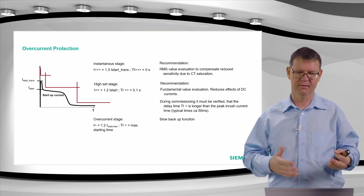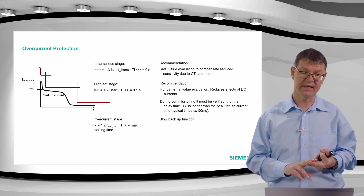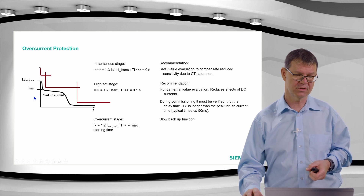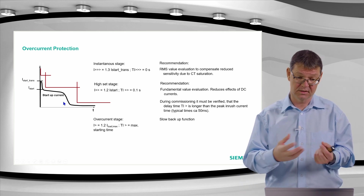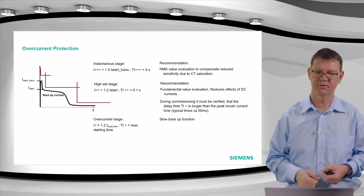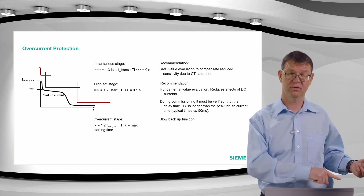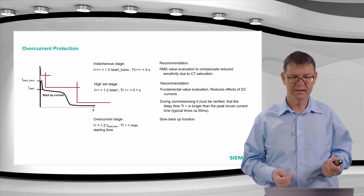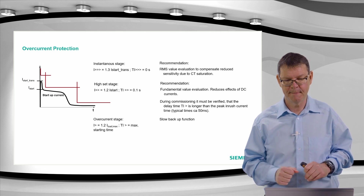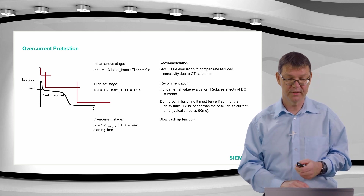For ground fault protection in a grounded network, we can apply a ground overcurrent stage ANSI 50/51N. The setting threshold should be determined by observing the apparent ground current during motor startup and placing the threshold 10–20% above that value for a sensitive single-phase fault protection. For compensated networks, the topic is more complex and may be addressed in a separate seminar.